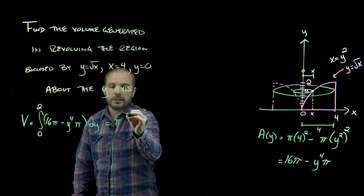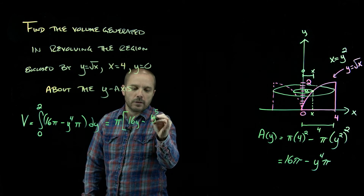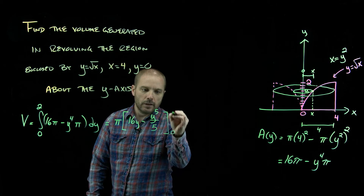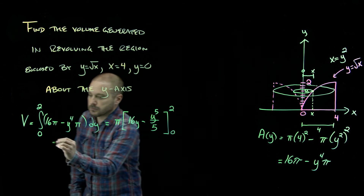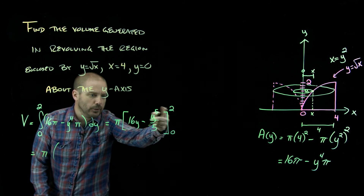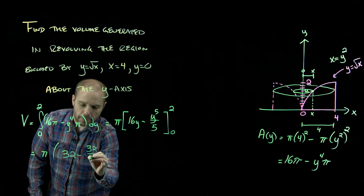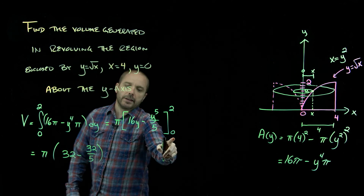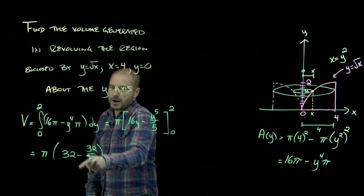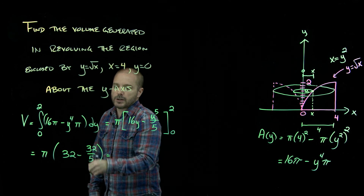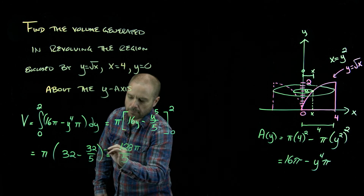Factoring out π and integrating: the anti-derivative of 16 is 16y, and the anti-derivative of negative y to the fourth is negative y to the fifth over five. Evaluating from zero to two: π times (32 minus 32/5) minus (0 minus 0). Simplifying, 32 minus 32/5 gives 128/5, so the volume is 128π/5.